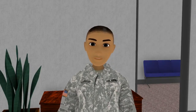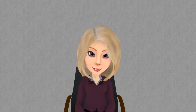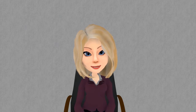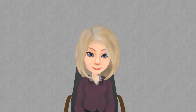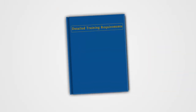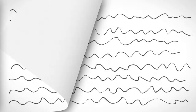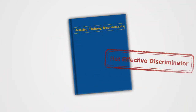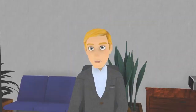Have you got another example? Suppose the government intends to buy some training services to support a particular weapon system. Suppose the government intends to use a set of detailed requirements specifying how much training, what kind of training, and when the training is to be provided. The approach an offeror is going to use to provide the training is always very important. However, under these circumstances, to use training approach as an evaluation factor may serve no useful purpose. It will not provide an effective means to discriminate among competing proposals because all offerors will follow the same detailed approach called for in the government specification. Those are good examples of subject matter areas that are not good discriminators.